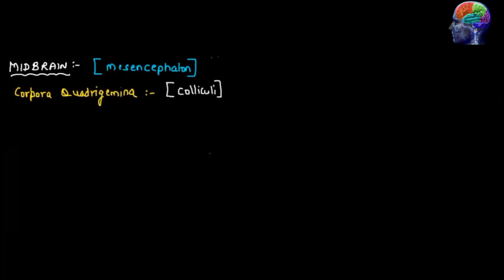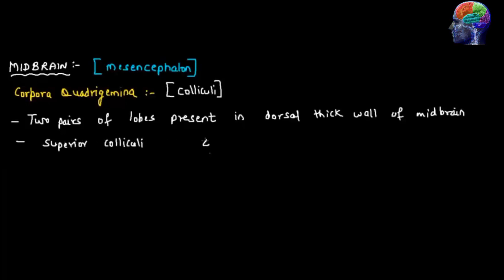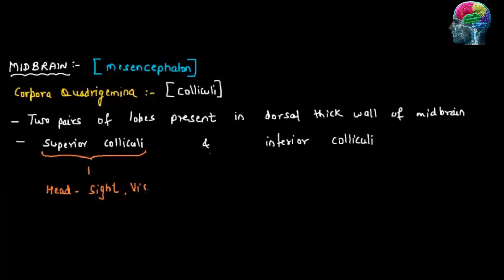Colliculi is nothing but corpora quadrigemina, present in two pairs — the superior colliculi and the inferior colliculi. The two superior colliculi form one pair and the two inferior colliculi form the second pair. Superior colliculi is responsible for head movement with respect to sight and vision. Inferior colliculi is responsible for auditory and hearing functions.